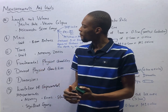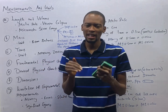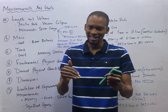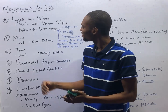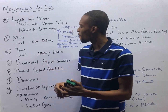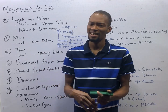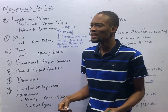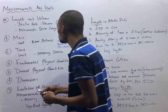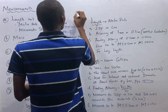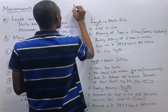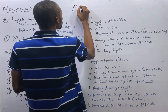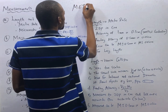The three main fundamental quantities are length, mass, and time. But looking at all the fundamental quantities, you use this shortcut to remember them.